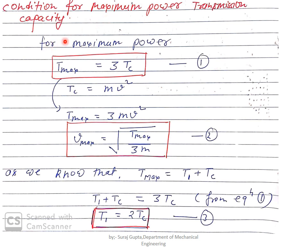Now, the condition for maximum power transmission capacity — the derivation is not in your course. The condition is that T_max must equal three times the centrifugal tension, where centrifugal tension equals m·v², and m is mass per unit length. This is equation number one. So T_max equals 3·m·v².